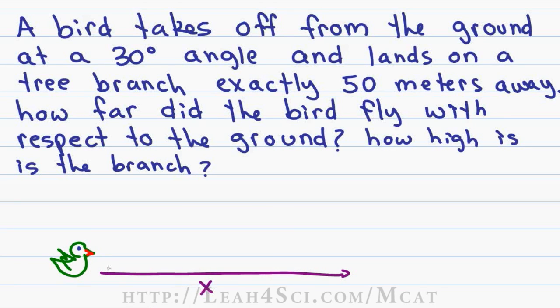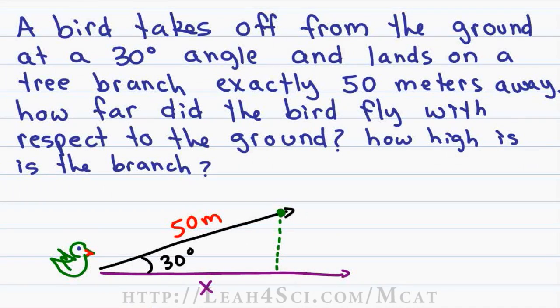The ground will be our x axis and the bird takes off at 30 degrees so our angle is 30 for a total distance of 50 meters. If the bird lands on a tree over here, if we're following along on the ground, we would have walked something less than 50 meters and if we want to know the height of the branch, that'll be significantly less than 50 meters. Now even though this isn't drawn to scale, you can get some idea that the x distance will be closer to 50 than the y. So how do we figure out the x and y components?